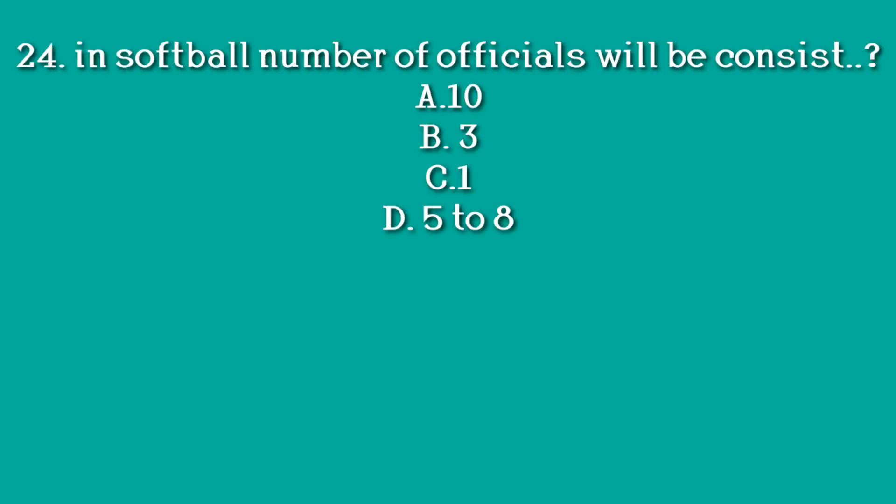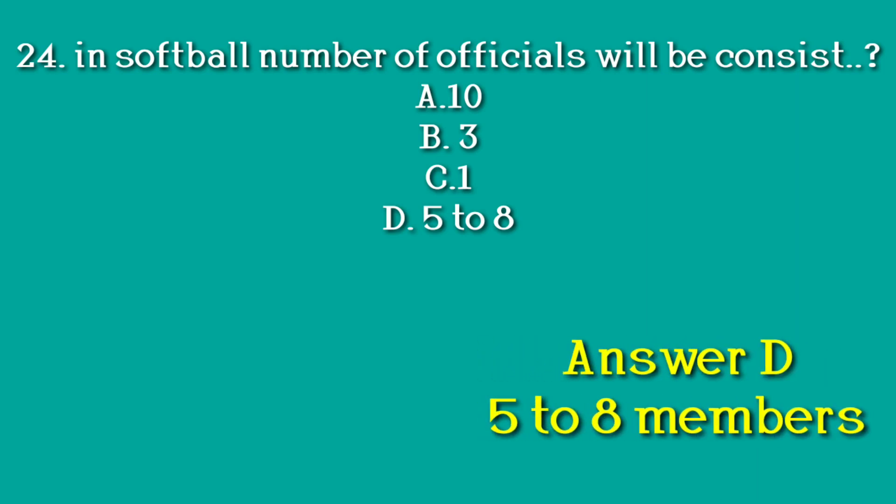Question number 24: In softball, how many officials will there be? Option A. 10 officials. Option B. 3 officials. Option C. 1 official. Option D. 5 to 8 officials. Answer: D. 5 to 8 members.